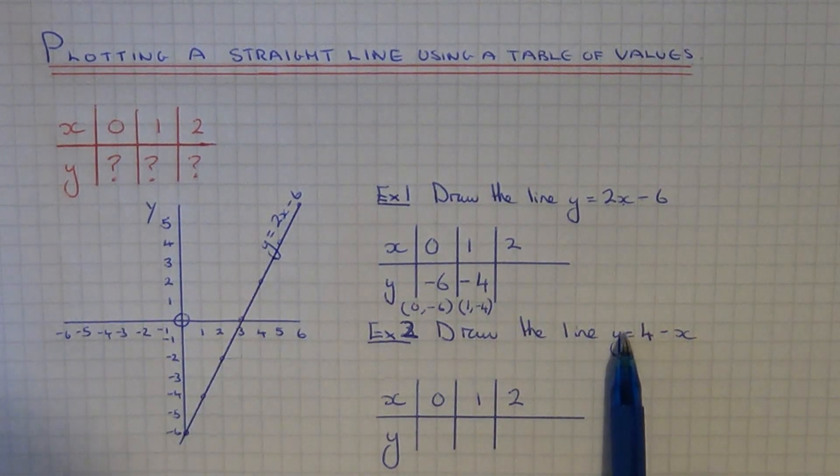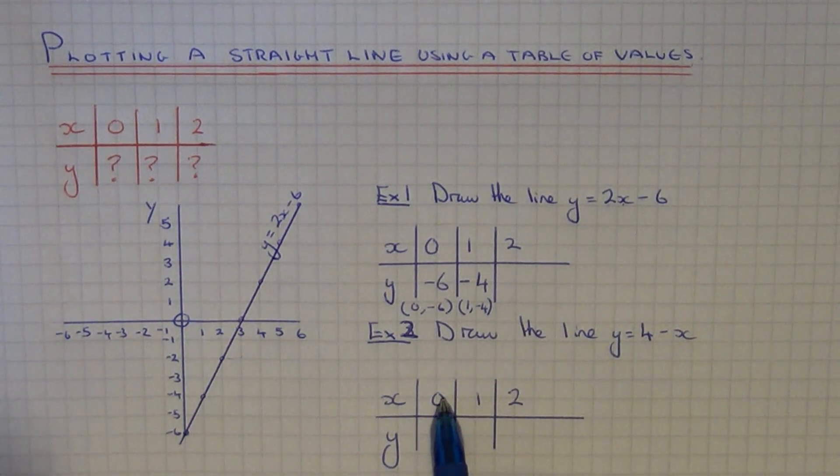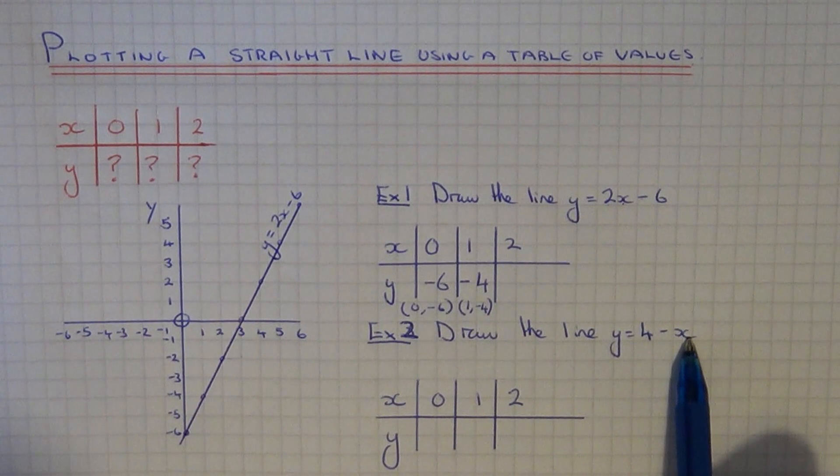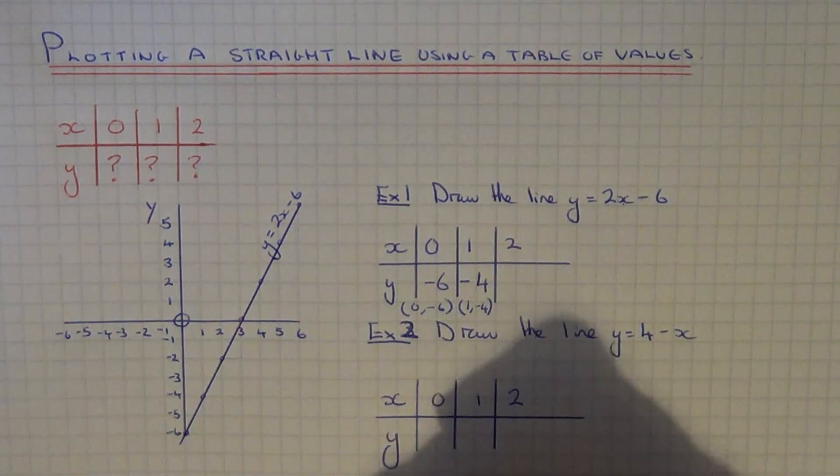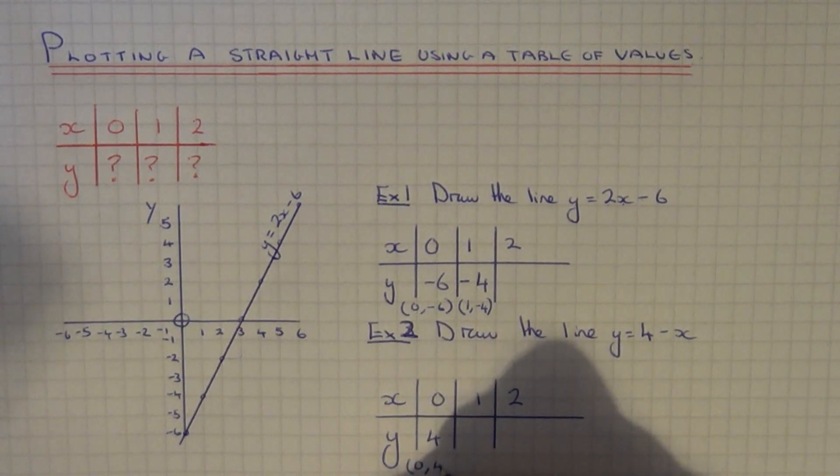This time our equation is y equals 4 take away x. So if x is 0, let's sub it in. It'll be 4 take away nothing. 4 take away nothing is 4. So our first coordinate is 0, 4. So if we plot that onto our coordinate grid.